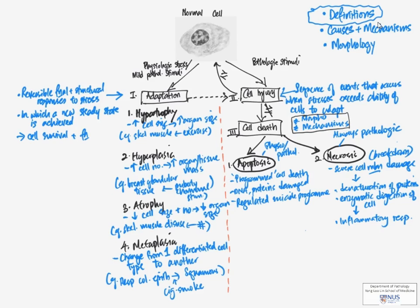So in the next mind maps, we are going to move on to talk about the causes and mechanisms of cell injury and then also about the morphology of cell injury and the different types of cell death.